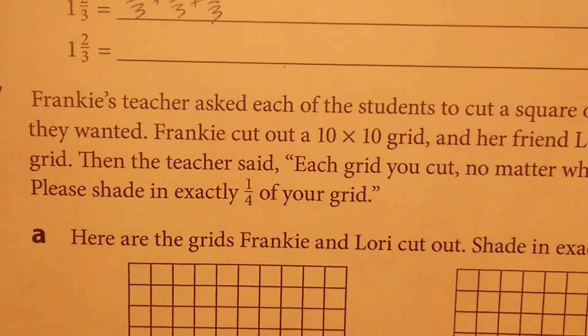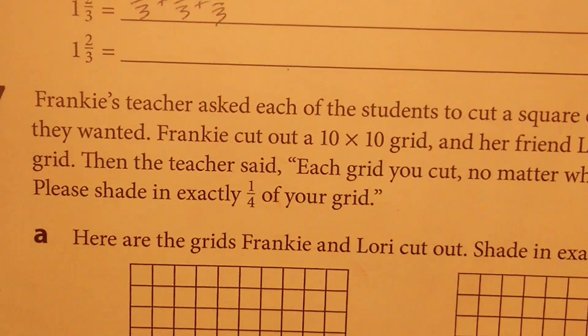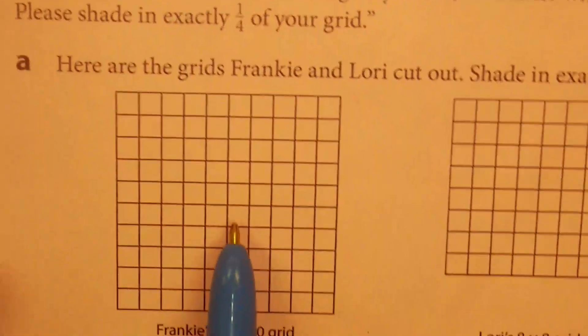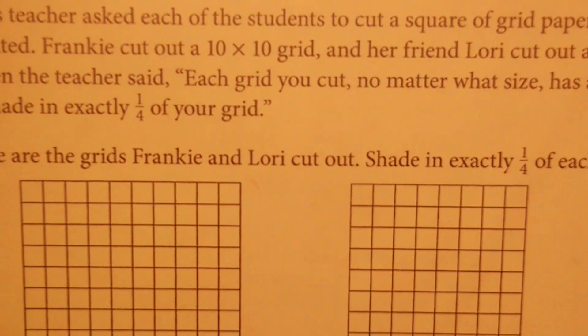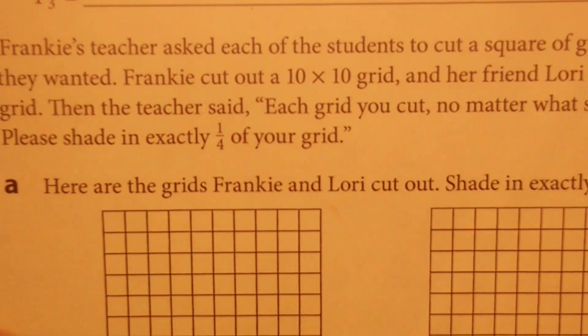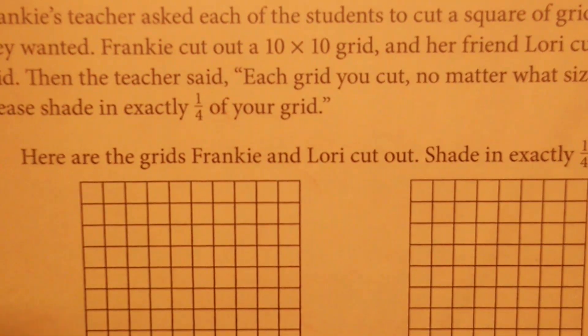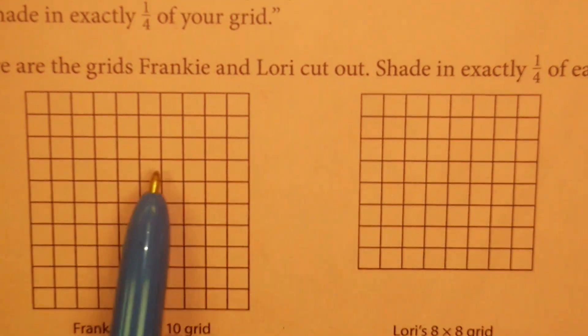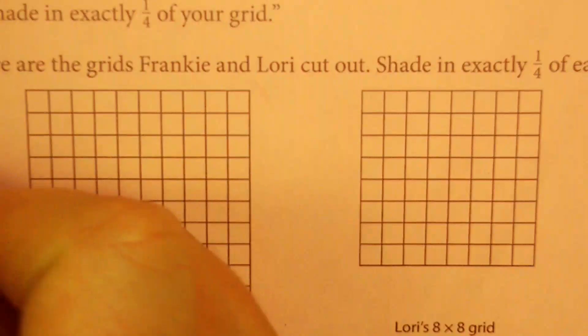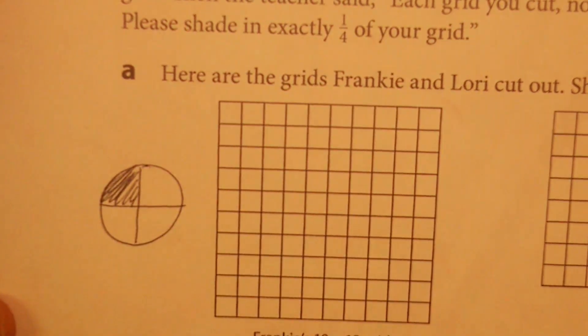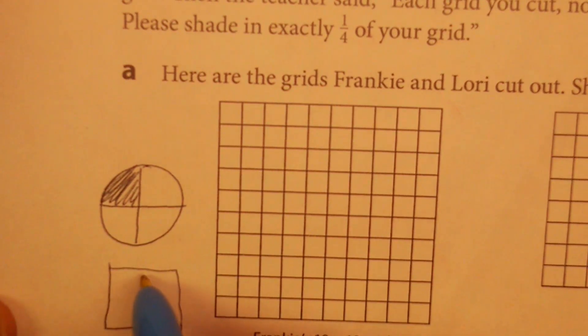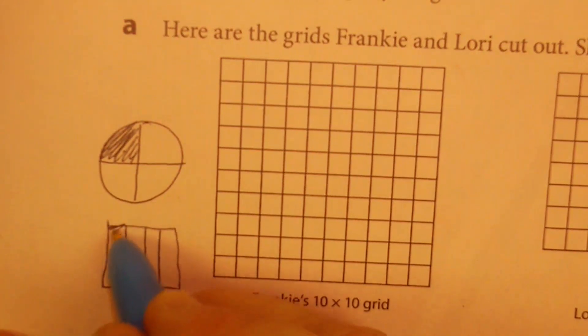Frankie's teacher asked each of the students to cut a square of grid paper any size they wanted. Frankie cut out a 10 by 10. That's what we have here. And her friend Lori cut out an 8 by 8, which is right next to it. The teacher then said, each grid you cut, no matter what size, has a value of one. Please shade in exactly one-fourth of your grid. Here are the grids. Shade exactly one-fourth of each grid. So the teacher said, no matter what size you cut it, you can always shade in one-fourth. Well, right now I'm sort of thinking like this. If I think of one-fourth as maybe being a quadrant, right? Sometimes we're used to one-fourth maybe cutting up a square into bacon strips, which does work really well sometimes. But you could also shade it this way. But let's see if we can do this.